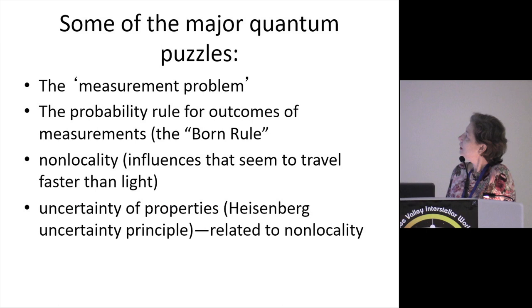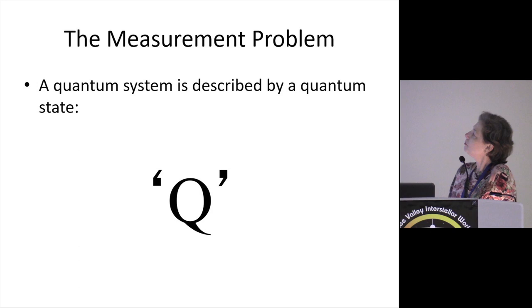So just a quick overview of some of the major quantum puzzles, the so-called measurement problem, and I'll be talking a little bit more about these, the probability rule for outcomes of measurements, which is called the Born rule, named after Max Born, this thing called non-locality—in fact John just referred to it in his last question to David Brin—that we seem to have influences that seem to travel faster than light, also uncertainty of properties, the well-known Heisenberg uncertainty principle. This is also related to non-locality in the sense that if you have some kind of a quantum system and you've been able to ascertain its position, its momentum is completely uncertain, and vice versa. So these are some of the puzzles that quantum theory presents to us.